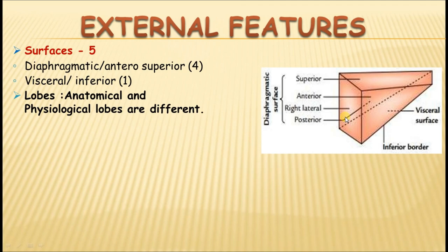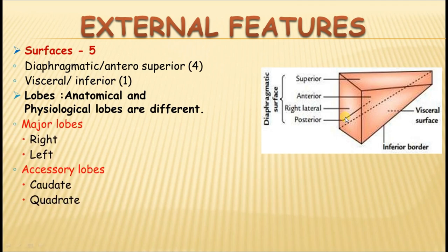The lobes of the liver are the right and left lobe. The demarcation between the right and left lobe is different anatomically versus physiologically. In addition, there are the quadrate lobe and the caudate lobe. Occasionally, you can also find the Riedel's lobe — an accessory lobe visible from the right lateral surface, extending downwards; it is not always present.